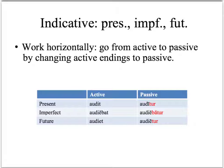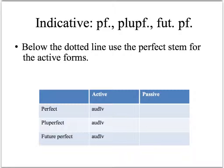So once again — repetitio — change the active ending to passive: t-u-r, bat-u-r, et-u-r. Remember on the sheets that I give you, there's a dotted line, and below that dotted line are the next three tenses, which are all built on the perfect stem.